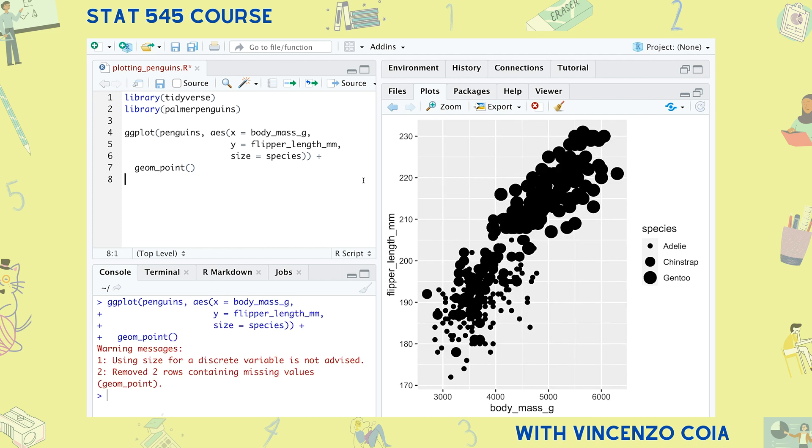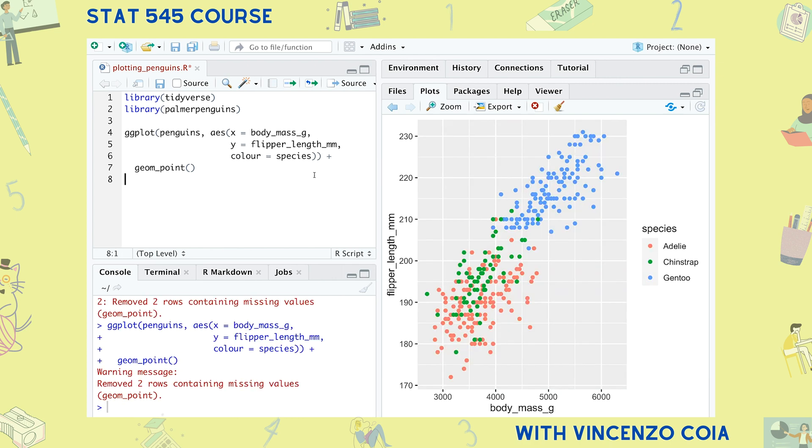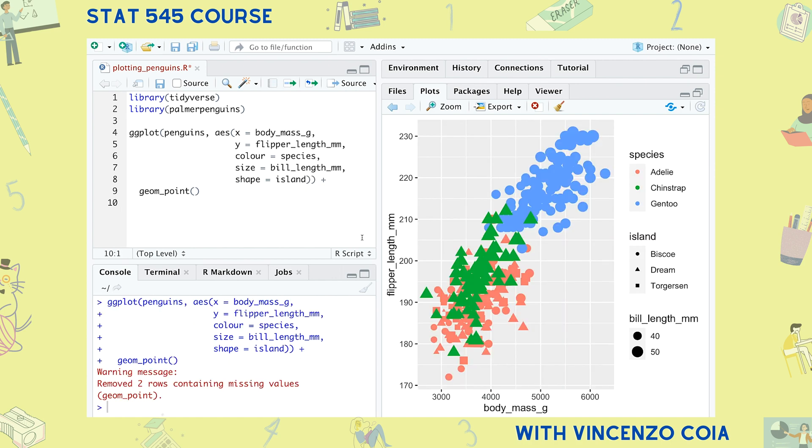We probably wouldn't want to map the species variable onto the size aesthetic, because size is more suitable for variables that need a sliding scale. In other words, continuous variables like bill length. Let's use colour instead, which, by the way, can use either the British or American spelling. Each aesthetic can accommodate a new variable from your data, but don't go overboard. There is such a thing as information overload. So just what is the second grammar of graphics? It's an aesthetic mapping. In other words, a specification of which variable goes with which aesthetic.